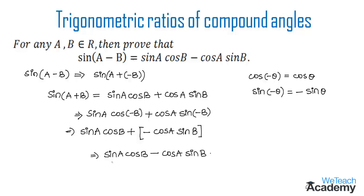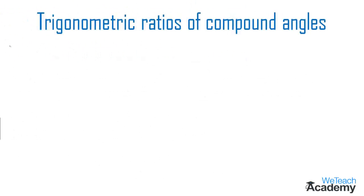So that implies we can write this as sin a cos b minus cos a sin b, which is nothing but the value on the RHS. Hence we have proved that sin(a - b) = sin a cos b minus cos a sin b. Now let us proceed and discuss an example on this formula.